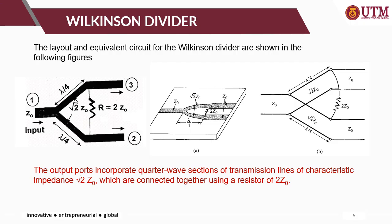This is how the Wilkinson power divider looks like. The figures show the layout and the equivalent circuit. There are two lambda-over-4 transmission line transformers introduced between port 1 and the output ports, port 2 and port 3. There is an additional lambda-over-2 element included in parallel to the T-junction design, and each lambda-over-4 transformer has the impedance of root-2 times Z-naught.